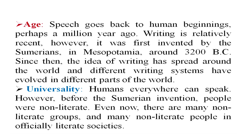The second difference is Universality. Humans everywhere can speak. However, before the Sumerian invention, people were non-literate. Even now, there are many non-literate groups and many non-literate people in officially literate societies. This means that everybody can speak, but not everyone writes — that is the universal feature.